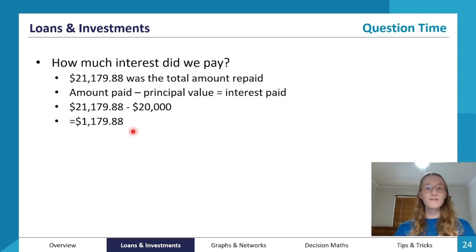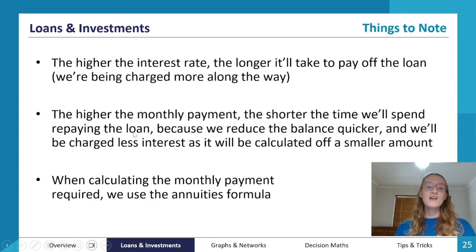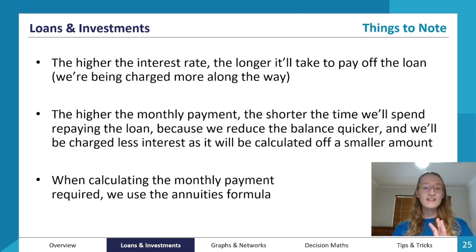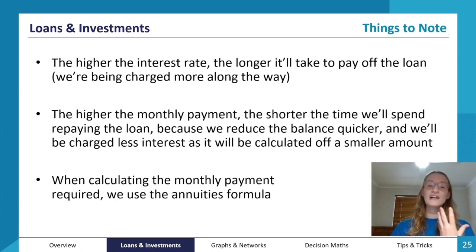Making higher monthly repayments means you pay off the loan faster and therefore pay less total interest. Making more frequent repayments also speeds up repayment and reduces total interest. Conversely, a higher interest rate means it takes longer to pay off the loan because more interest is charged with each compounding period. A higher repayment frequency or amount reduces the balance quicker, so interest is calculated on a smaller amount each time.